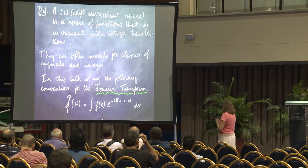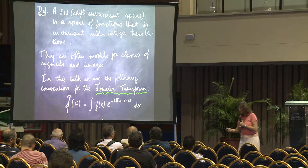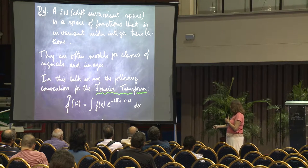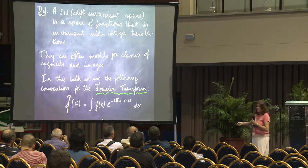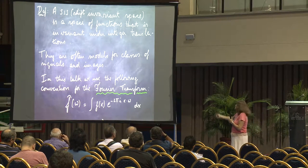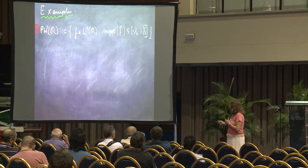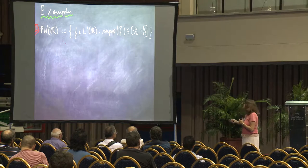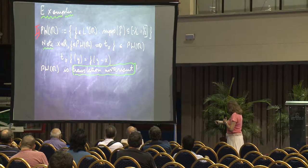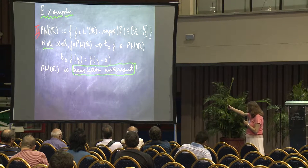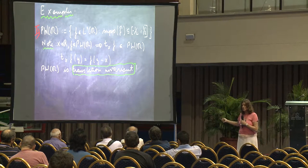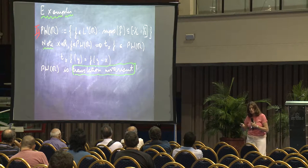If you recall the Fourier transform: if instead of looking at f you look at the translate of f, which is simply f(x − y), what happens when you make the transform is that just an exponential comes out, so the support of the function does not change. Therefore this space is what we call translation invariant — if a function is in this space, a translation by any real number is also in that space.